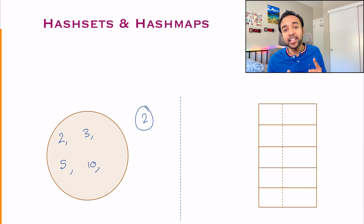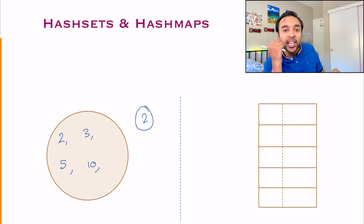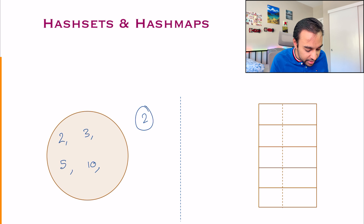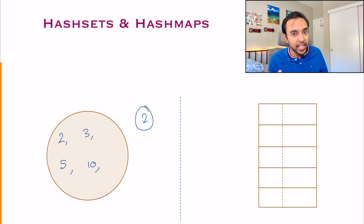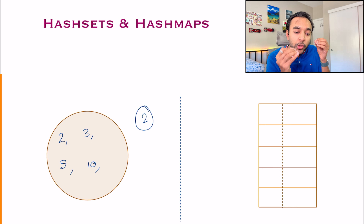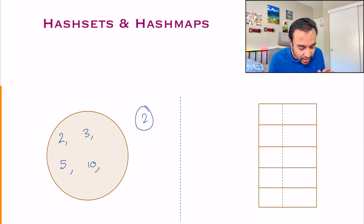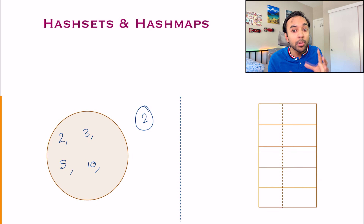One more advantage is you can query all of these elements in constant time. For example, you can immediately ask: is the number three in my hash set? And with O(1) time complexity, you will either return true or false. If a number does not exist, like 11, you will get a false. This is the basic idea of a hash set — you are trying to remember all the unique elements that you have encountered. They don't have to be integers; they can be strings or objects as well.